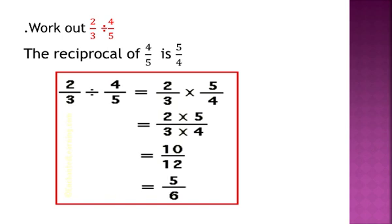The next example: work out 2 over 3 divided by 4 over 5. The reciprocal of 4 over 5 is 5 over 4. So 2 over 3 divided by 4 over 5 is 2 over 3 multiplied by 5 over 4. Numerators: 2 times 5 is 10. Denominators: 3 times 4 is 12. We get 10 over 12. Since 2 is a common factor of 10 and 12, we reduce the fraction by dividing both by 2. The final answer is 5 over 6.